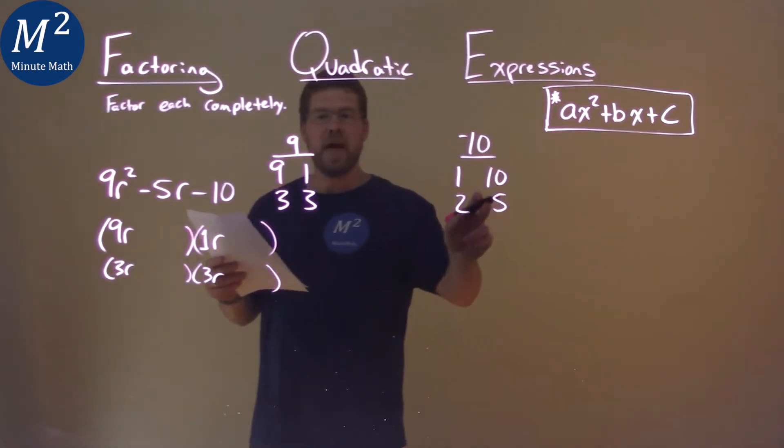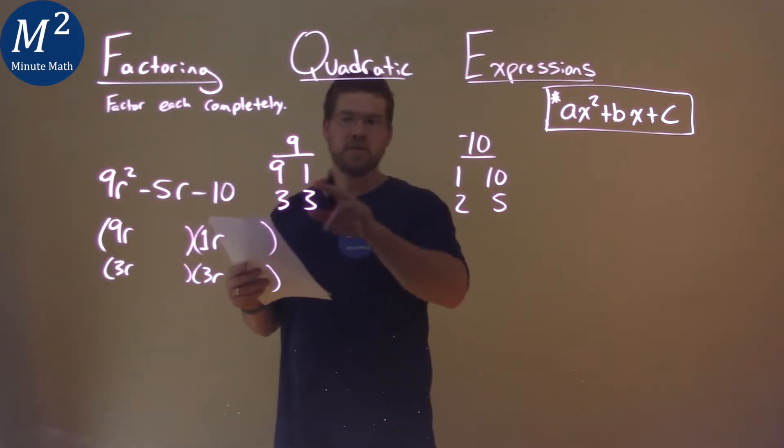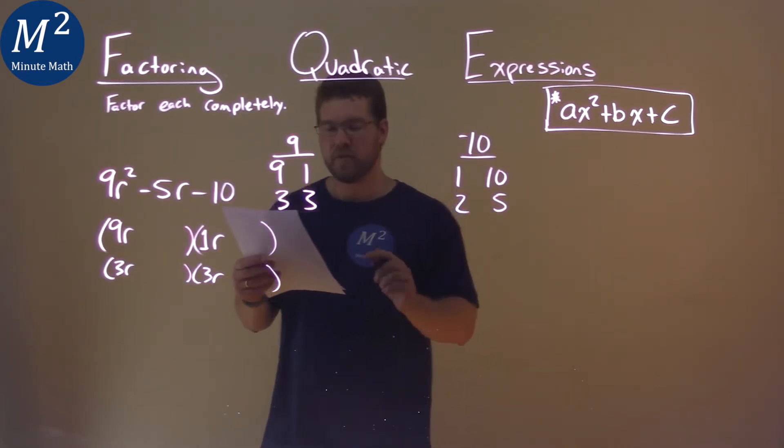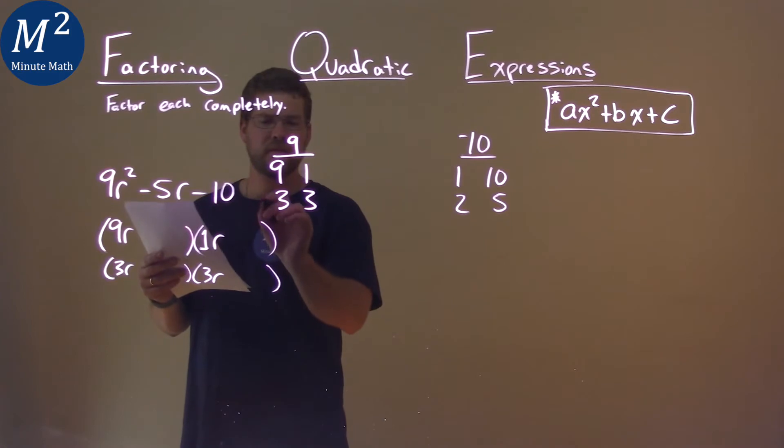We know that our final result adding has to be negative. So in that, we want to make sure that the larger of the two being multiplied is going to be the negative on the right-hand side. Let's test some values out.